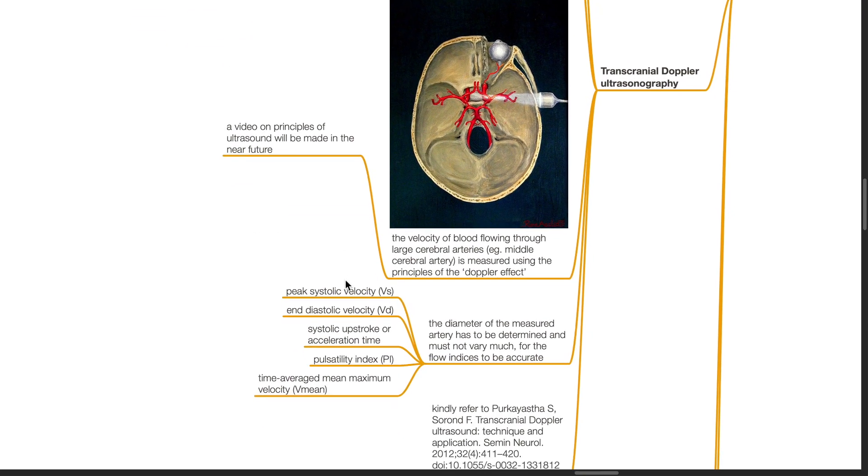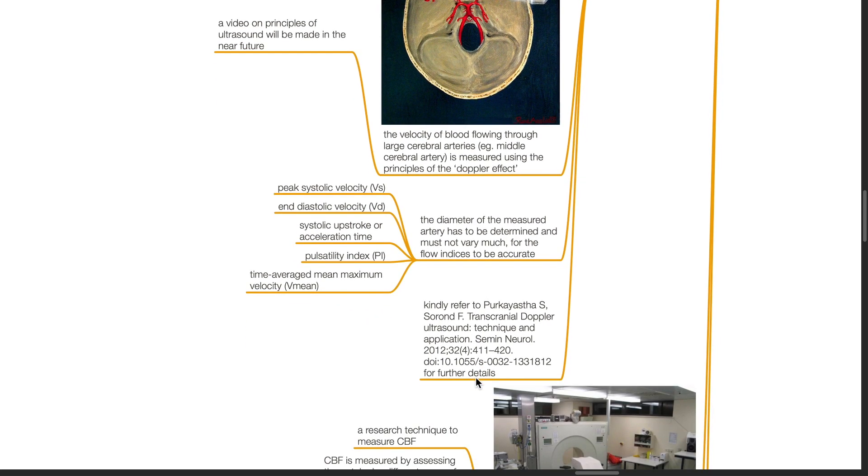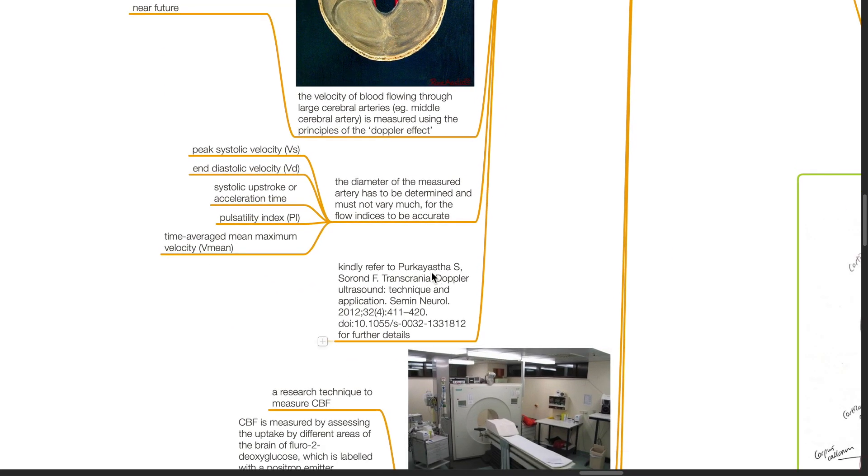The diameter of the measured artery has to be determined and must not vary for the flow indices to be accurate, which includes peak systolic velocity and diastolic velocity, systolic upstroke or acceleration time, pulsatility index, time average, mean maximum velocity. Kindly refer to the article by Purkayastha et al. regarding this topic for further details.